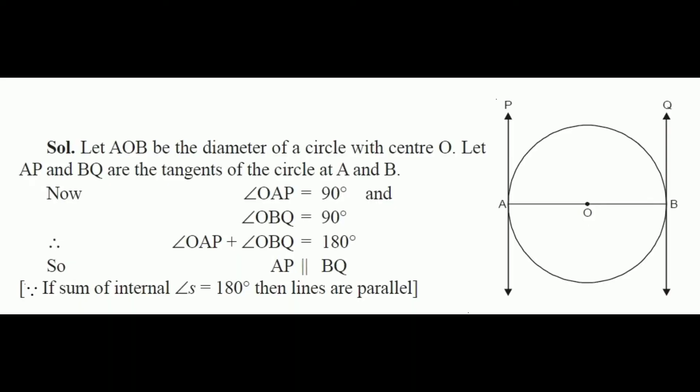Let AB be the diameter of the circle with center O. AP is the tangent at endpoint A, and BQ is the tangent at endpoint B. Since the radius and tangent are perpendicular, angle OAP = 90° and angle OBQ = 90°. Adding these, angle OAP + angle OBQ = 180°.